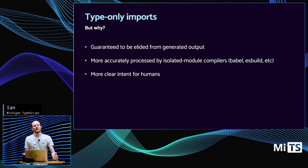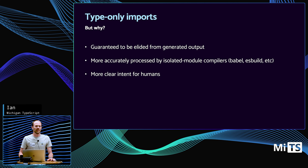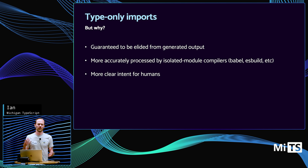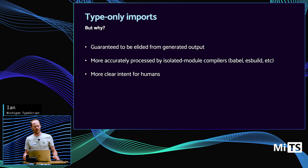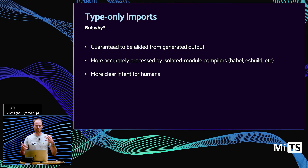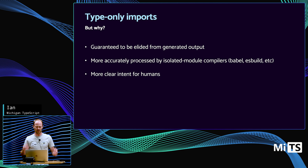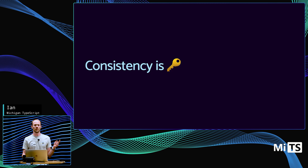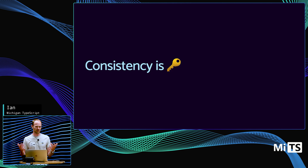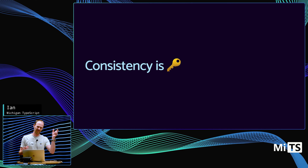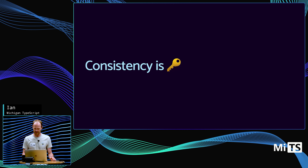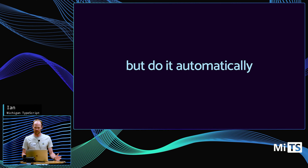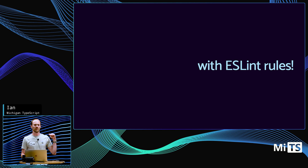Most importantly for me, I find it much clearer when looking at imports to see whether something is a type or a value. As a TypeScript developer, you're always of two minds — thinking about runtime code and the type layer. Consistency is key: if you use the type keyword sometimes but not others, it sends mixed messages. You want it enforced automatically, which is where ESLint rules come in.